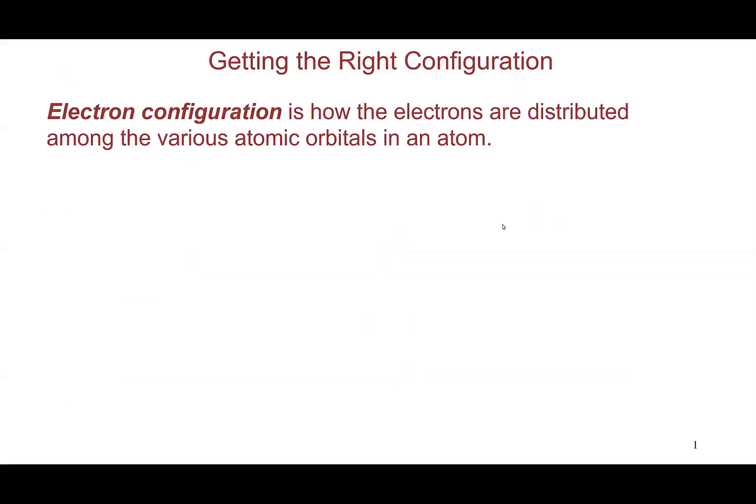In the previous video, the Schrödinger equation gave us three quantum numbers that determine the available orbitals in each atom, or the available rooms in which the electrons can reside. The next step is for us to determine where the electrons will go first, or what we call the electron configuration — how we distribute the available electrons into the available orbitals. Let's start with the notation to describe orbitals.